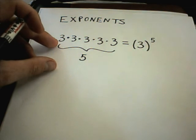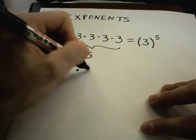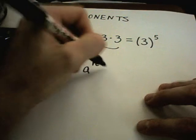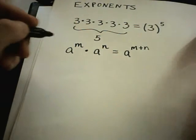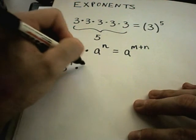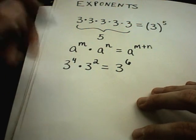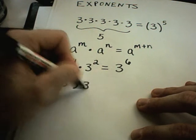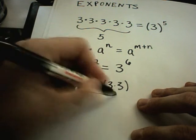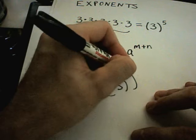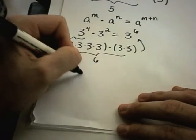This gives us our first basic rule: if you have a number a raised to a power m and we multiply it by a raised to the power of n, we add the exponents. For example, 3 to the fourth times 3 to the second equals 3 to the sixth. This makes sense because 3 to the fourth is three multiplied four times, and 3 squared is three multiplied twice — counting them up gives you six threes total.